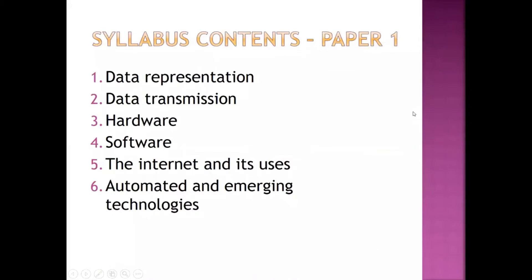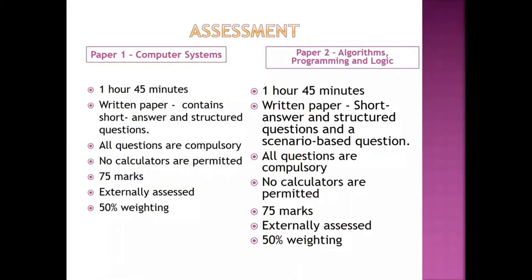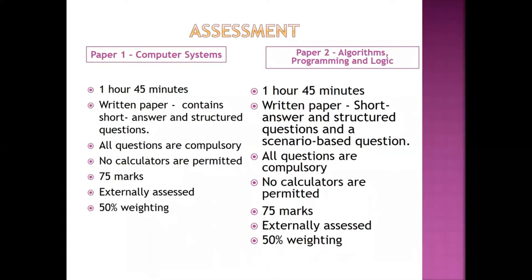Beginning with the first thing, that is the assessment. What computer science O-level W210 papers are about: there are basically two papers, Paper 1 and Paper 2. They both are 45 minutes duration. They both are written papers and all questions are compulsory. Calculators are not permitted. These both papers are of 75 marks and they are externally assessed. They both now have 50% weightage. This is something that you need to be focused on.